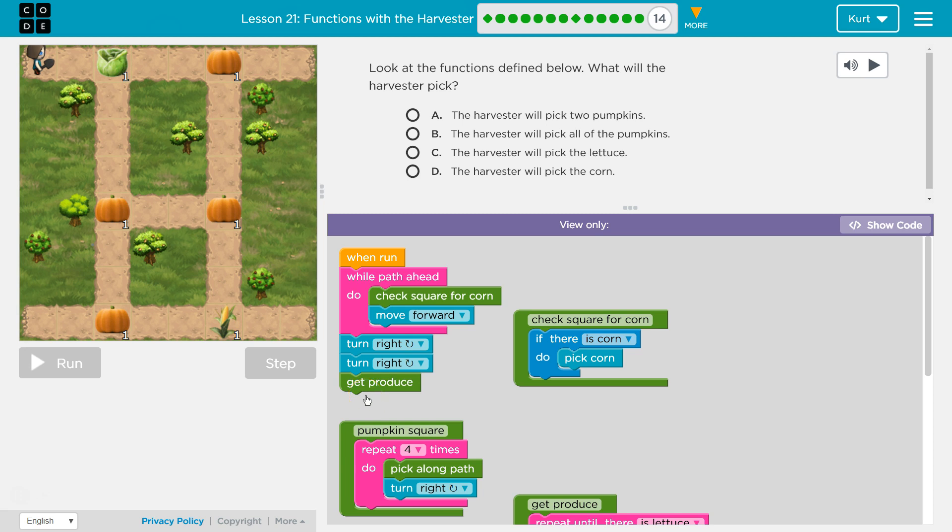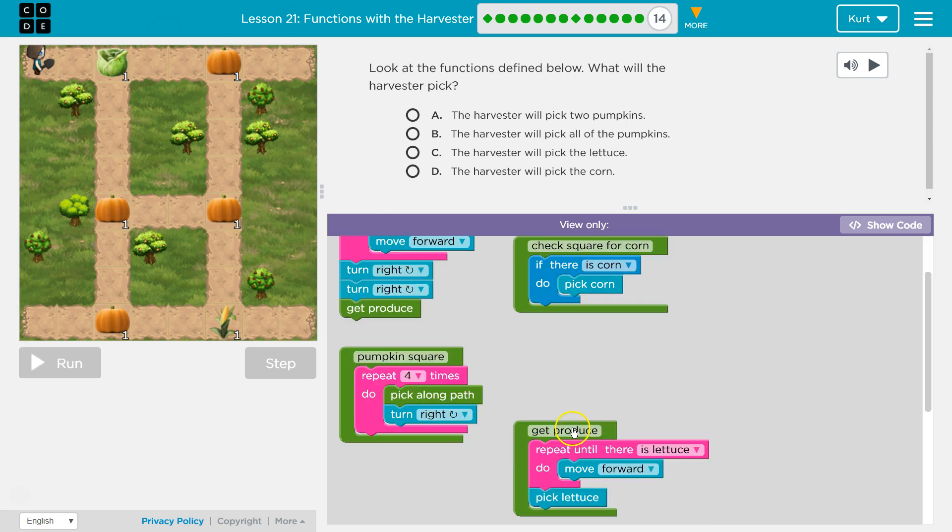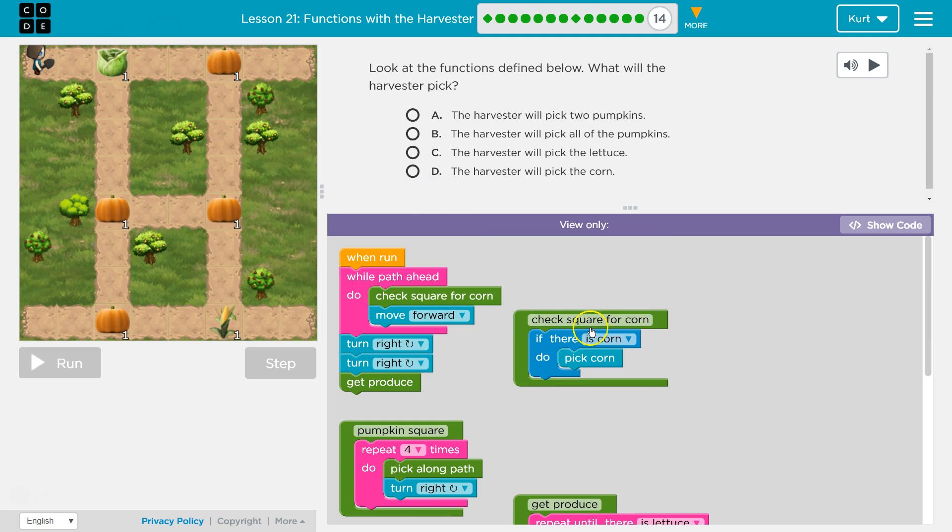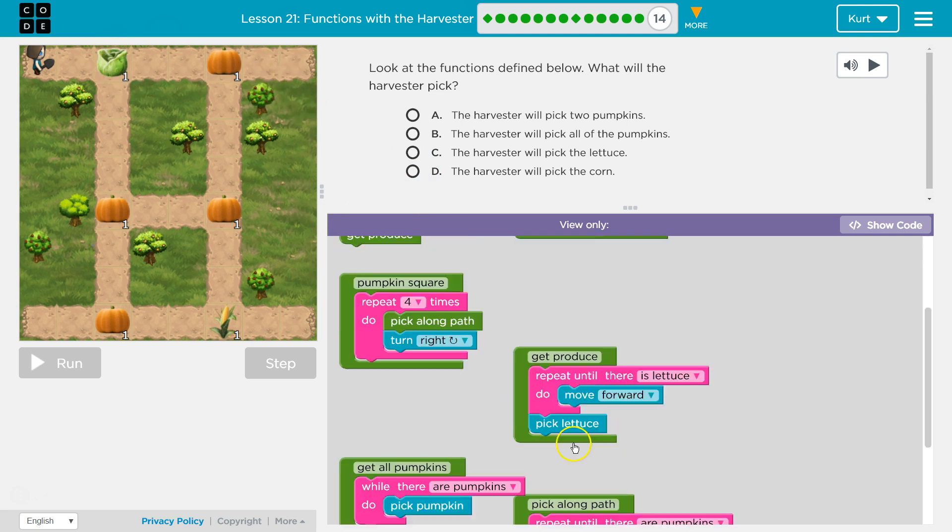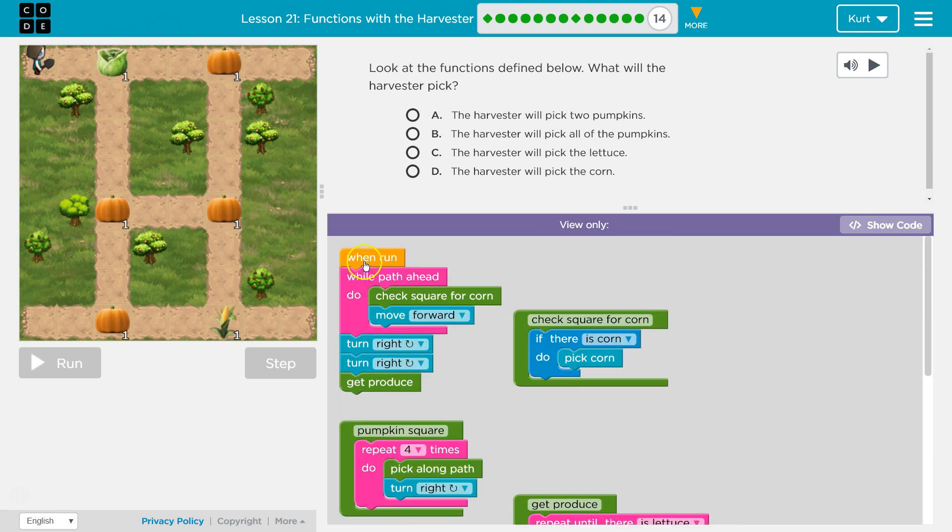So am I going to pick the pumpkin? No, this is just corn. The only thing I pick is lettuce, right? Because all I do is check for corn until I get to here, turn all the way around, and then I run get produce, which the only thing that picks is the lettuce at the very end. And then the program's done.